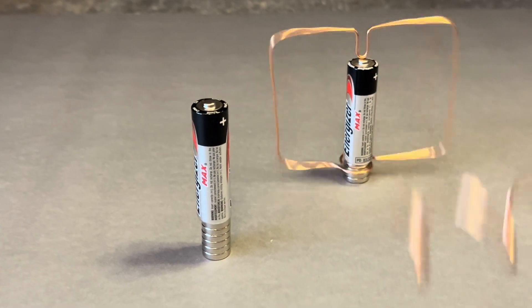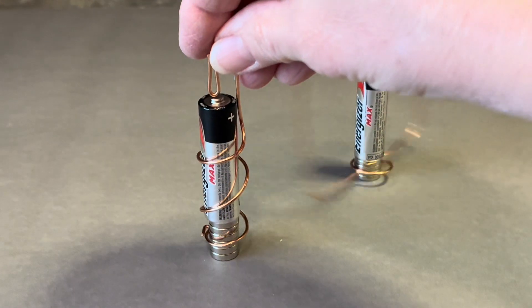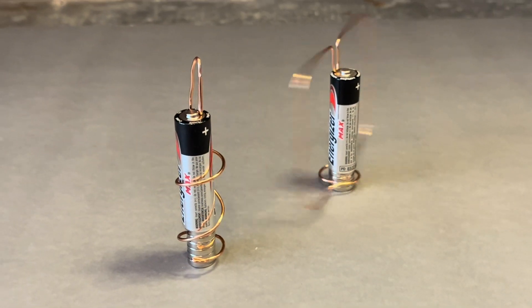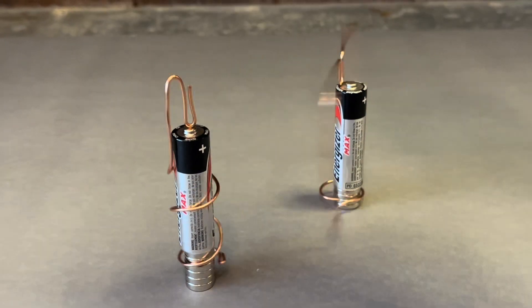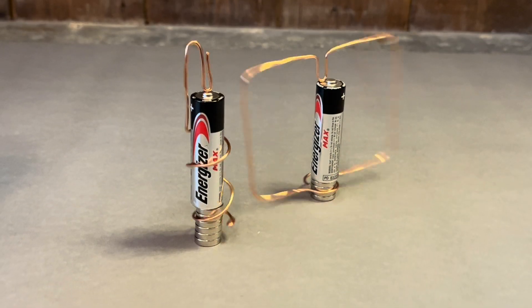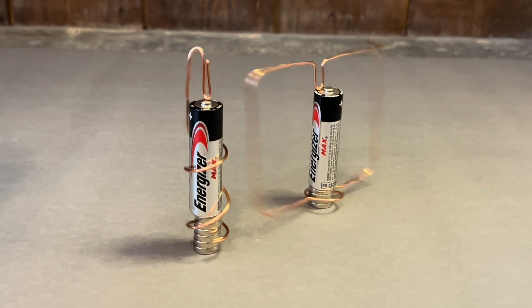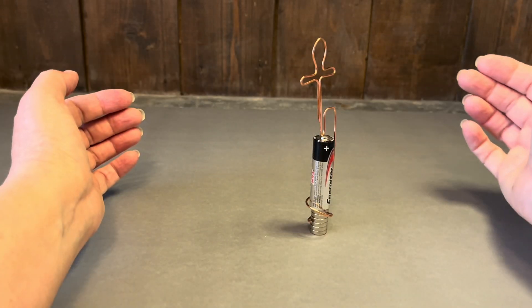When the wire touches the top of the battery and the magnets at the same time, there's an electrical current that flows through the wire. When the electrical current passes through the magnetic field, it results in a force that moves the wire, causing it to spin around the battery.